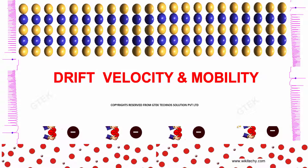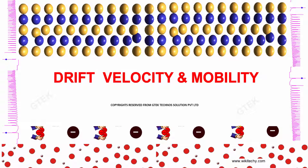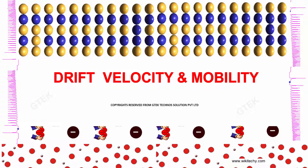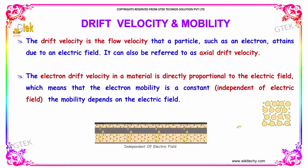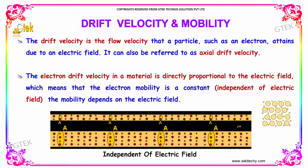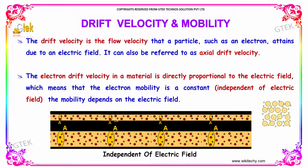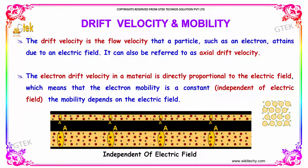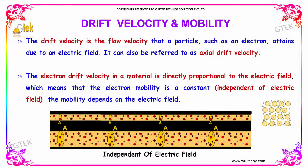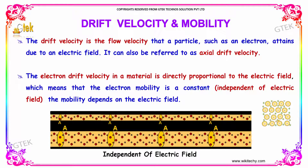We'll talk about the drift velocity and its mobility. The drift velocity is the flow velocity that a particle, such as an electron, attains due to an electric field. It is also called axial drift velocity.